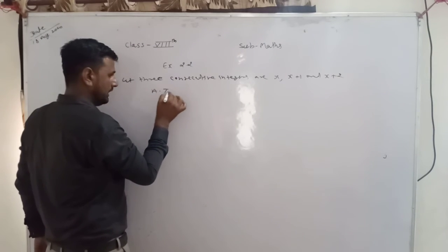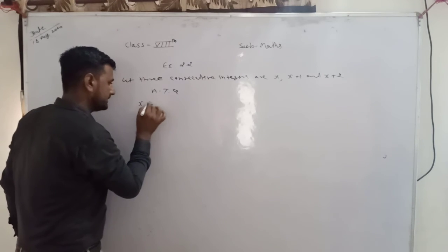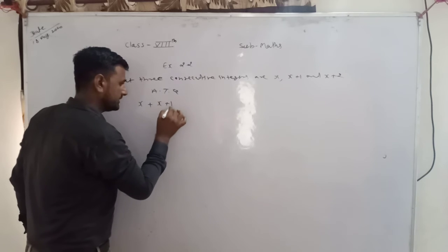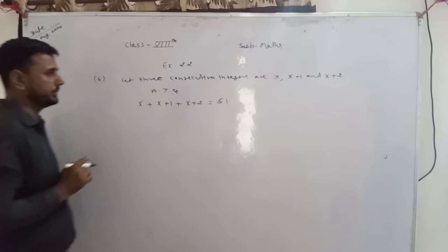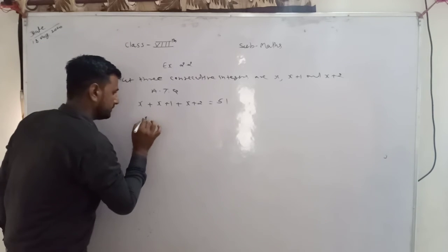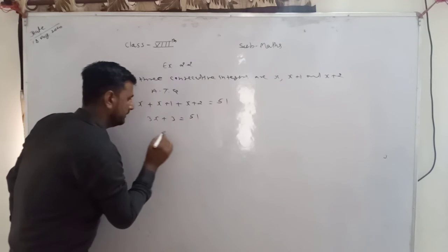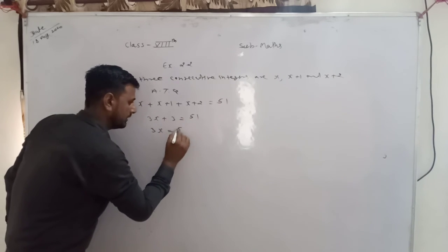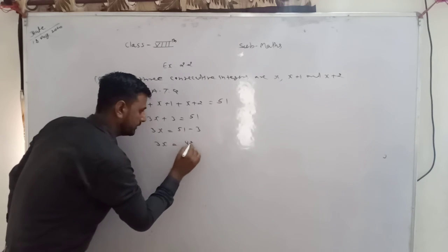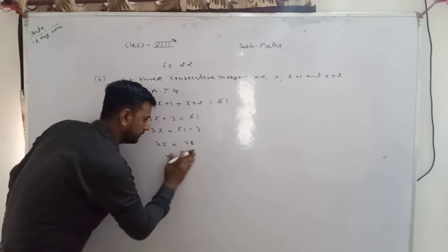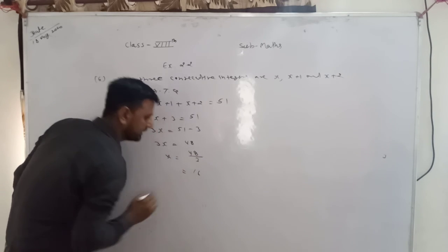According to question, अब क्या दे रखे हैं — इनका जो sum हो वो 51 है। तो x plus (x plus 1) plus (x plus 2) = 51। x plus x plus x add करेंगे तो 3x plus 1 plus 2 = 3, is equal to 51। तो 3x equal हो जाएगा 51 minus 3 = 48। तो x equal हो जाएगा 48 upon 3।